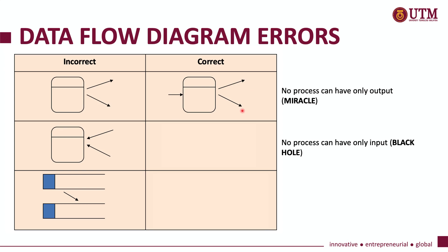The second error is when a process only has input and no output — we call this a black hole. To correct this error, you just need to make sure that the process has an output data flow.